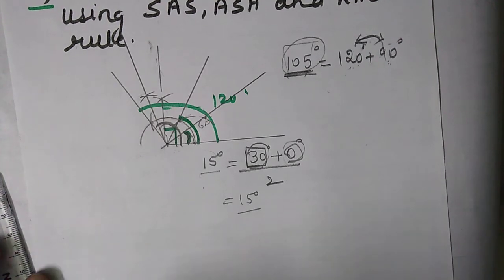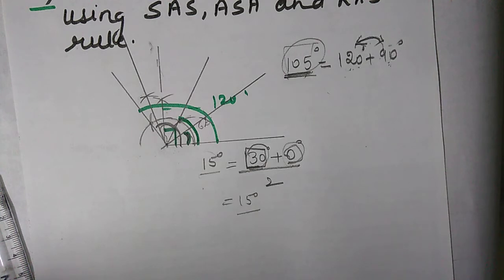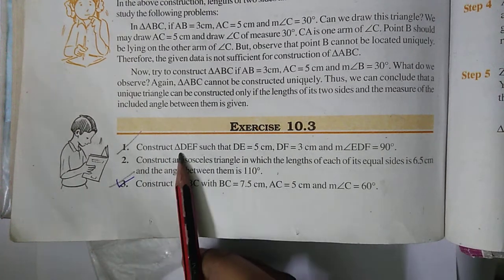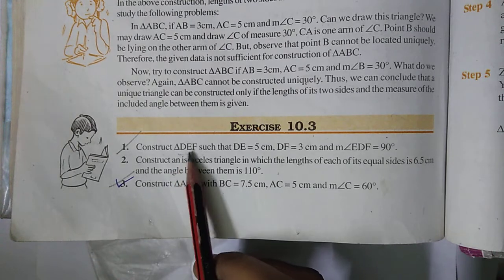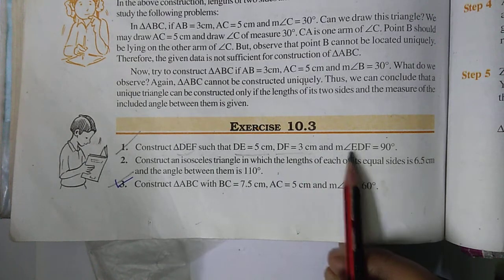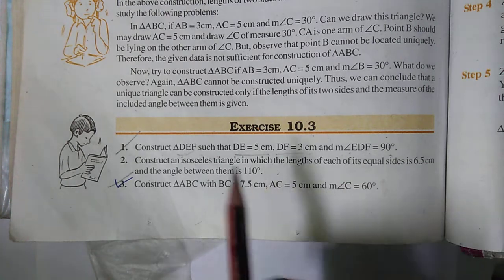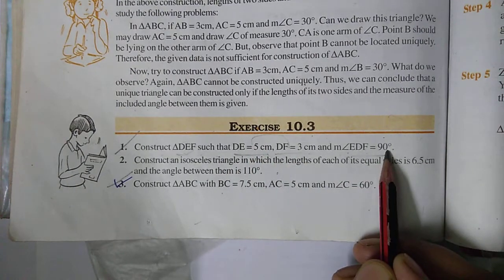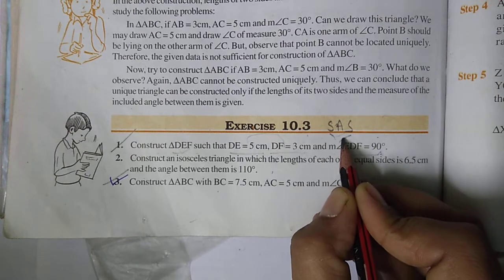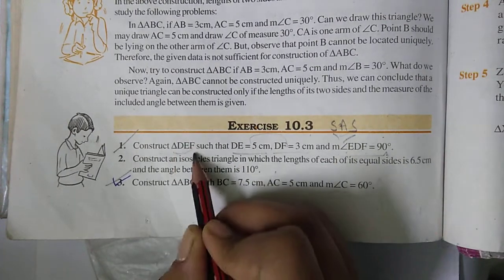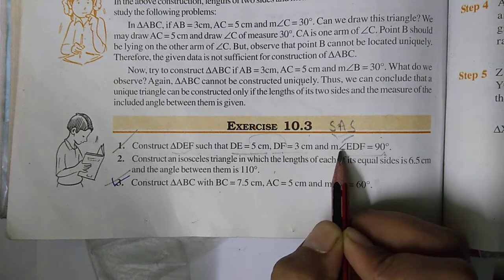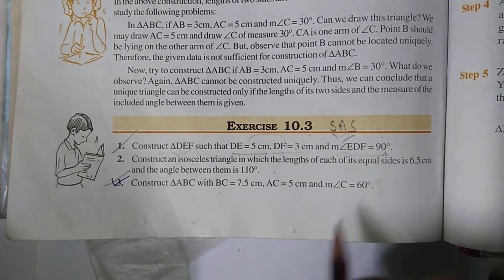Now we will do the questions, starting with exercise 10.3. Question 1: construct triangle DEF such that DE = 5 cm, DF = 3 cm, and angle EDF = 90 degrees. In this question, two sides and one angle are given, so it is based on SAS rule. We have to construct triangle DEF with DE = 5 cm, DF = 3 cm, and angle EDF = 90 degrees.